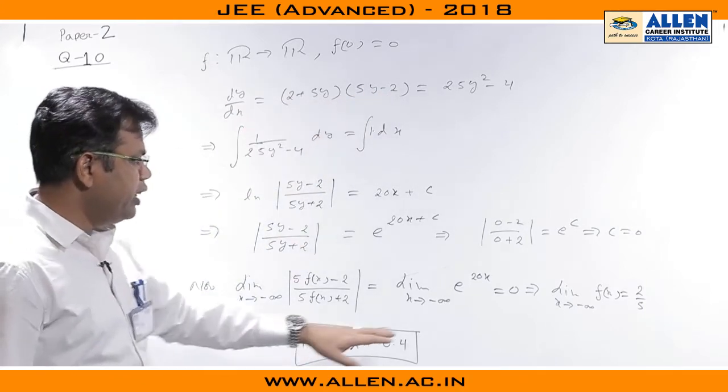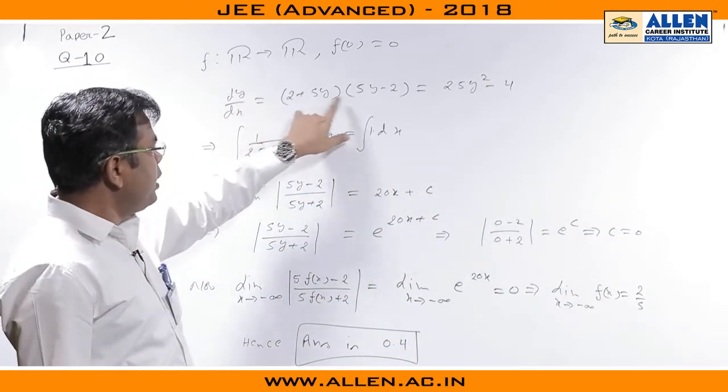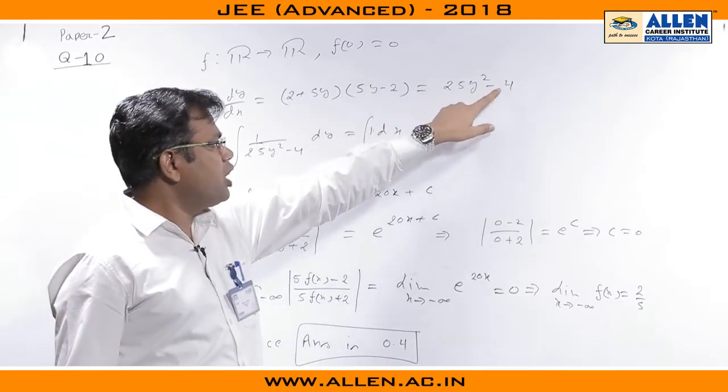In this problem, we need to find limit x tends to minus 1 of f(x). What we will do is multiply the right hand side to get 25y² - 4.